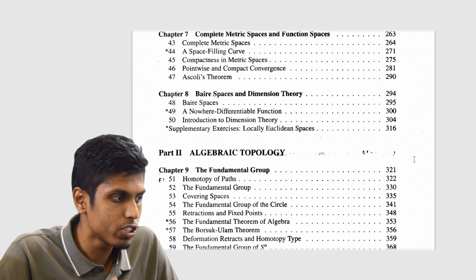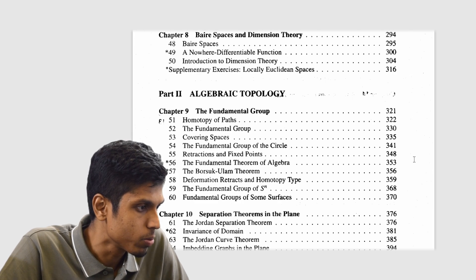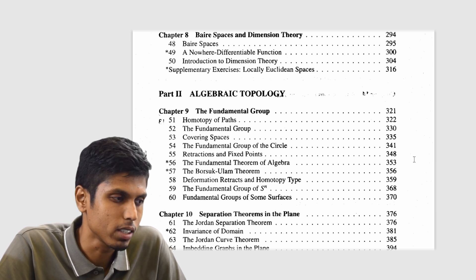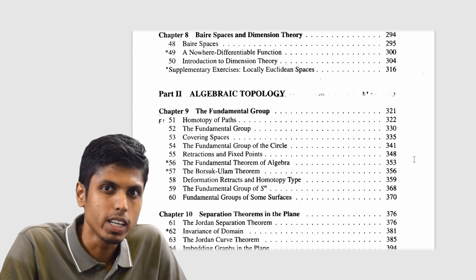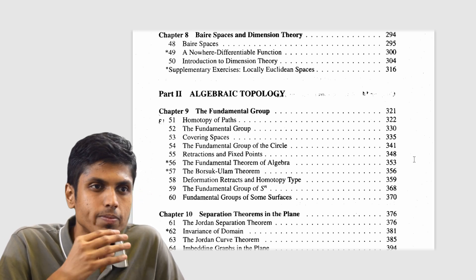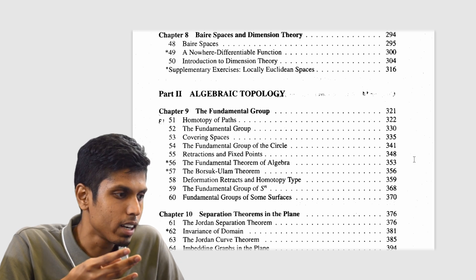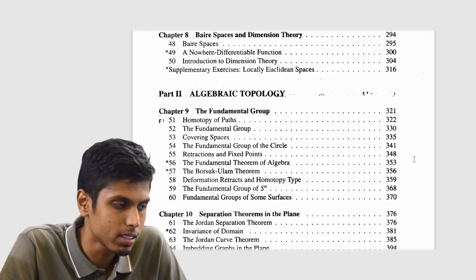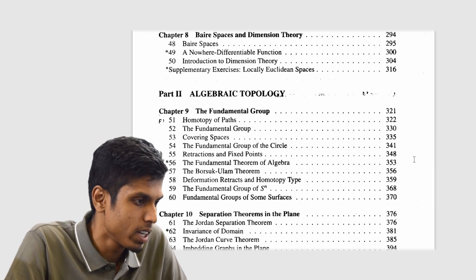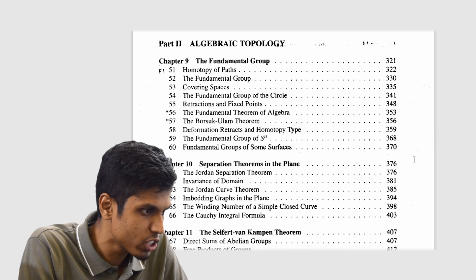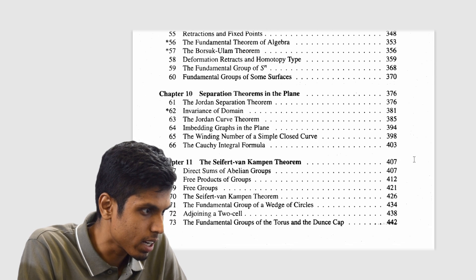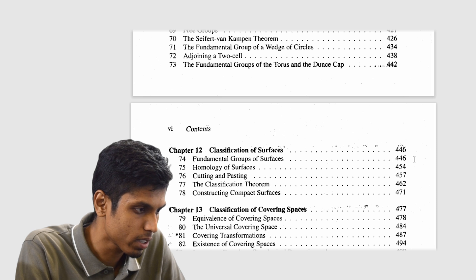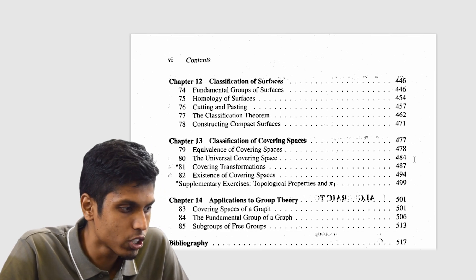Then comes the algebraic topology, which is part 2 of this book. It talks about the fundamental group, which is very important in research-level mathematics — not only in topology, but it has a wide range of applications. Even in algebraic K-theory and number theory, a lot of number theorists use the fundamental group for their analysis. You also have separation theorems, the Seifert–van Kampen theorem, covering spaces, and applications to group theory.